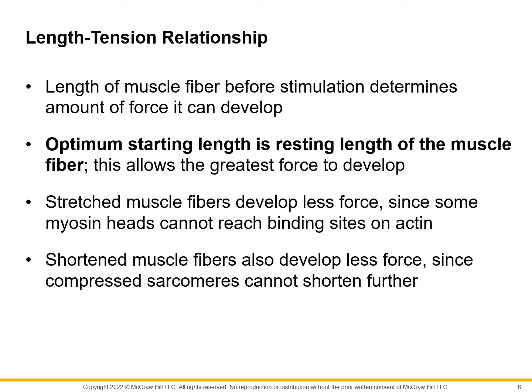The length of the muscle fiber before stimulation determines the amount of force it can develop. The optimum starting length is the resting length of the muscle fiber, which allows the greatest force to develop. Stretched muscle fibers develop less force because there's less overlap — some myosin heads cannot reach the binding sites on actin. Shortened muscle fibers also develop less force since the compressed sarcomere can't shorten any further.